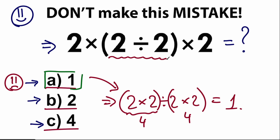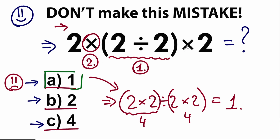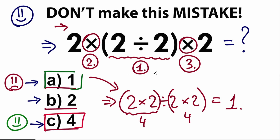The correct approach: first evaluate the expression inside parentheses — our first step. Second, go in strict order from left to right. In our question we have a mixture of multiplication and division, so we perform it left to right. This multiplication sign has the second priority, and this sign has the third priority. So the correct answer is 4, and you can be proud if you solved it that way.